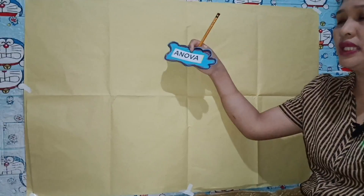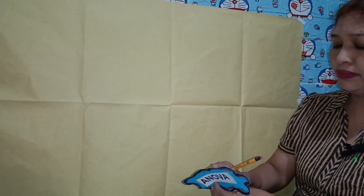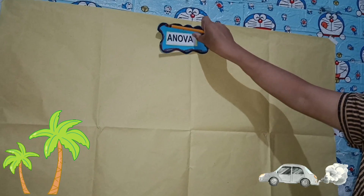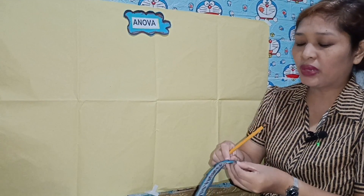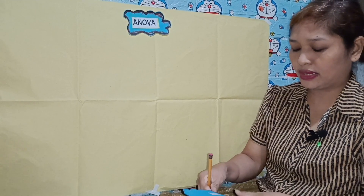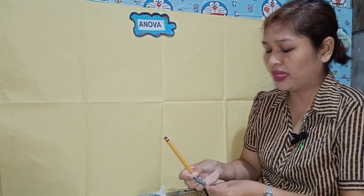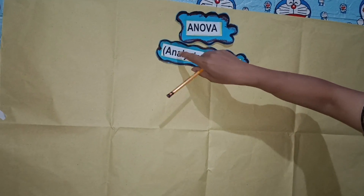This is my demo presentation about ANOVA. What is ANOVA? Based from my research, ANOVA is Analysis of Variance. This is a statistical method that compares the average means of three or more groups to determine if they are different from each other.